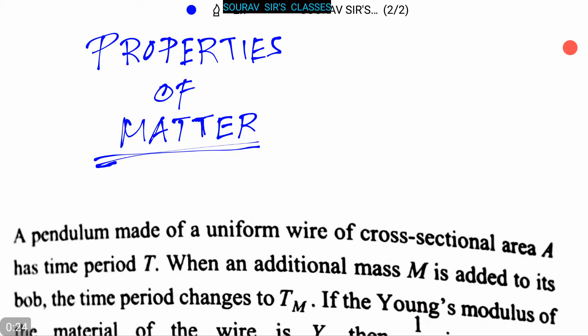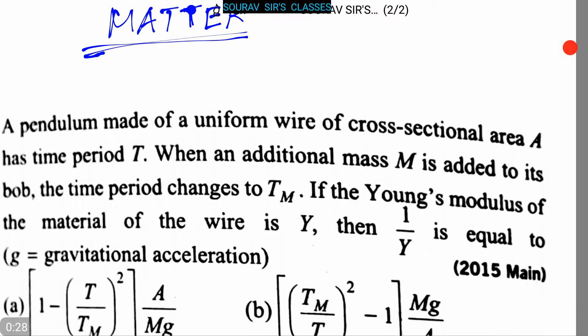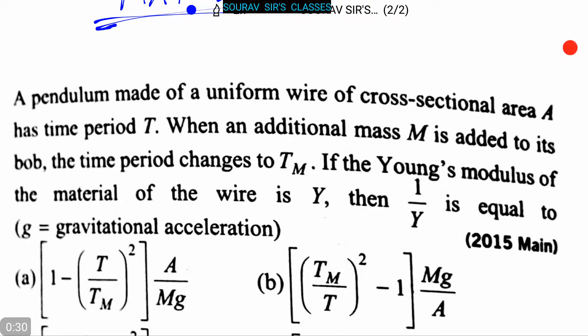Today our topic is properties of matter. Our first question is very important - it was in 2015 Main but it's so simple. The question is: a pendulum made of uniform wire of cross-sectional area A has time period T.